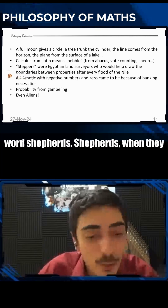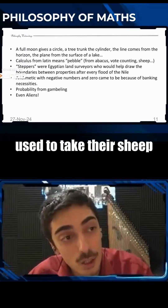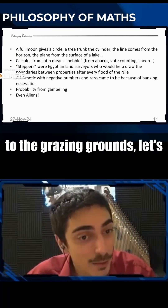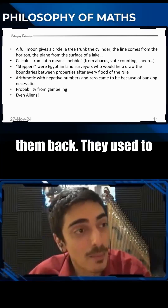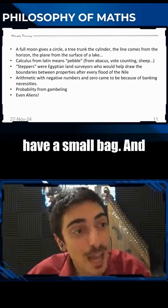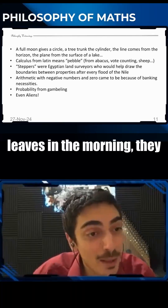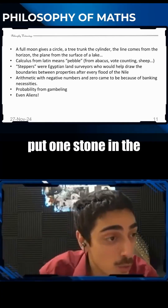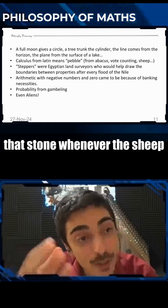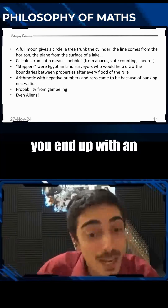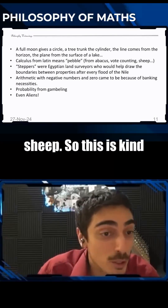Shepherds, when they used to take their sheep to the grazing grounds and then bring them back, they used to have a small bag. For every sheep that leaves in the morning, they put one stone in the bag, and then they remove that stone whenever the sheep comes back. When you end up with an empty bag at the end of the day, you know that you have all the sheep.